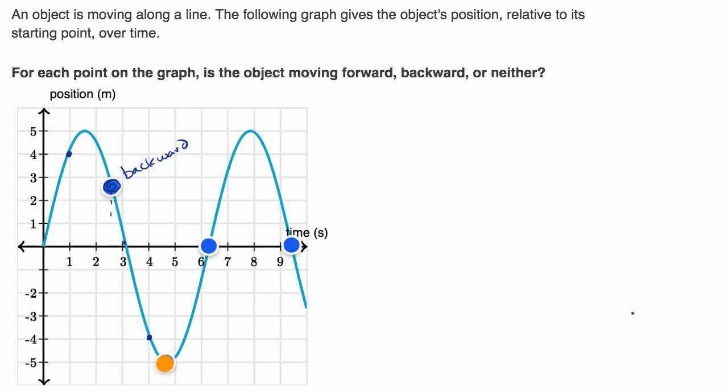And one way to think about it is, what would be the slope of the tangent line at that point? And the slope of the tangent line at that point would be horizontal. And so this is neither.